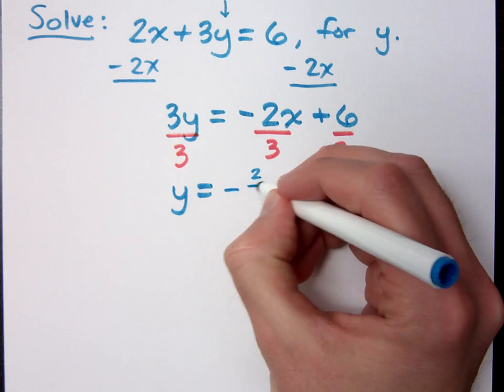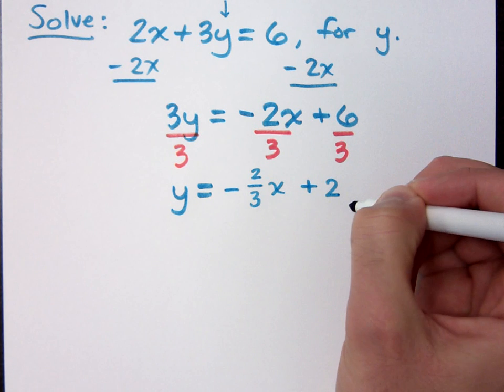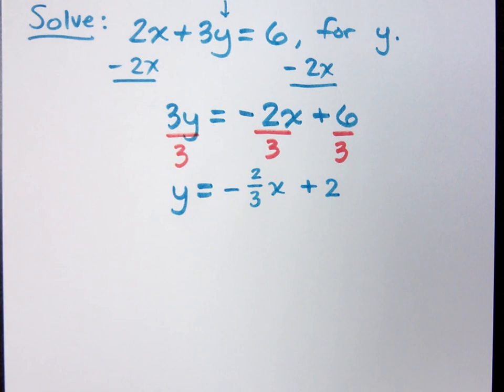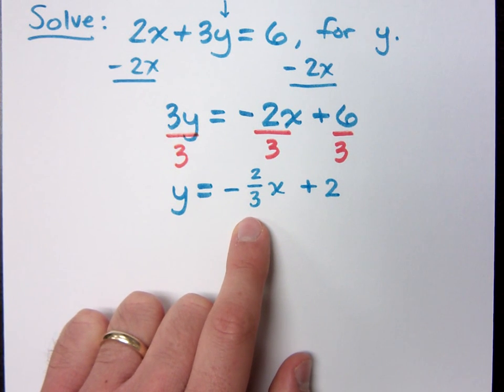I'm going to say negative 2 thirds x and then plus 2. And the reason I'm doing that is, again, to prepare us for the next chapter where we have to clearly identify the coefficient of x because of what we need to do with that later.